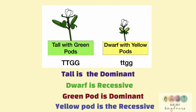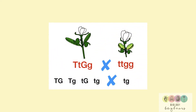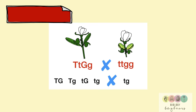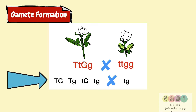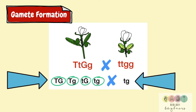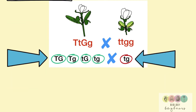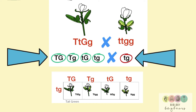What happens when you cross a heterozygous dominant plant with a homozygous recessive plant? We begin with gamete formation — the heterozygous dominant plant can have any T allele with any G allele, and this is the law of independent assortment. The homozygous recessive plant, because it only has small T and small G, that's the only gamete it makes. The offspring produced are tall green, tall yellow, dwarf green, and dwarf yellow — four different phenotypes in a ratio of 1:1:1:1.